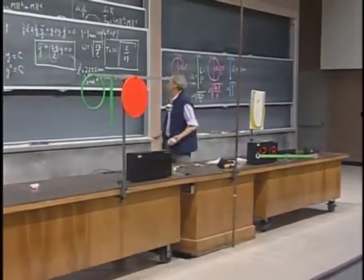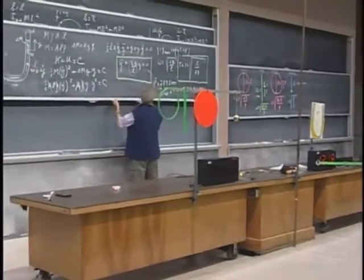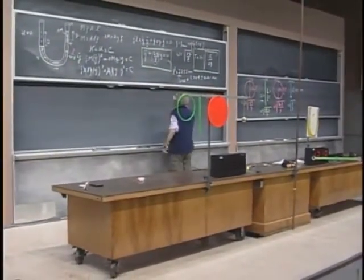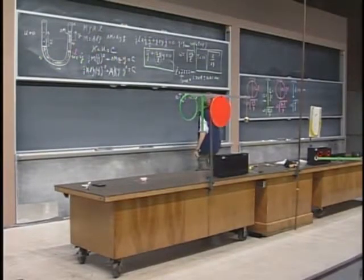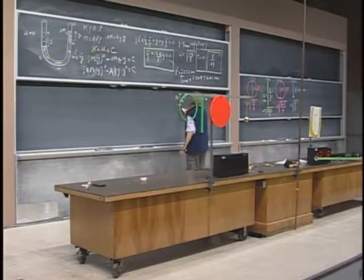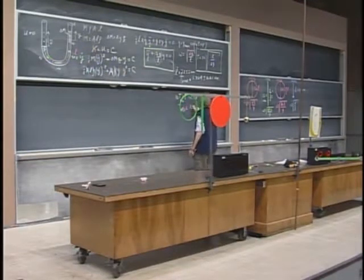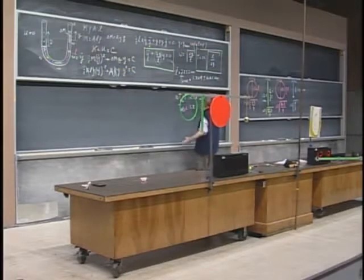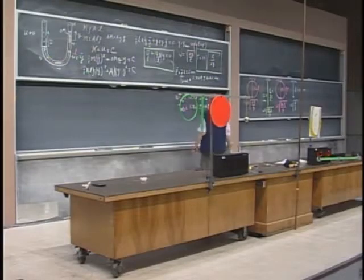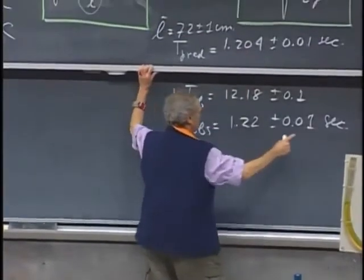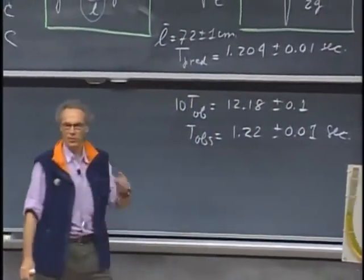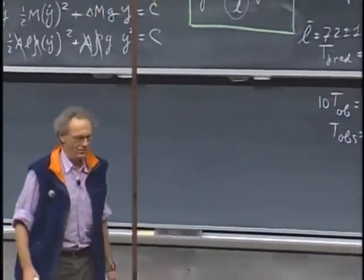12.18. So observed, ten T observed is 12.18. Okay, my reaction time is 0.1. So T observed is 1.22 plus or minus 0.01 seconds. Oh, that's not bad. Actually, there is an overlap. If you add this one here, you get one to one. And if you subtract it here, you get also one to one. So it's not bad. I expected it to be a little...